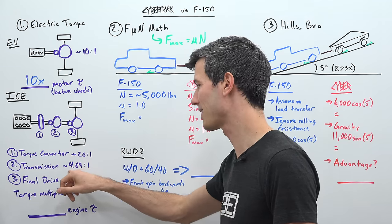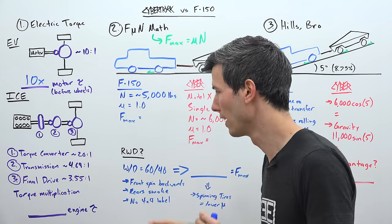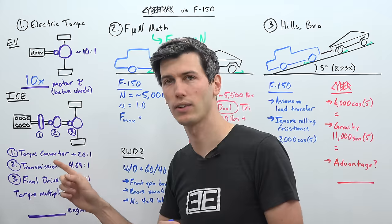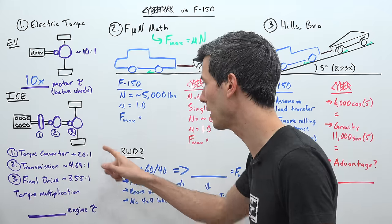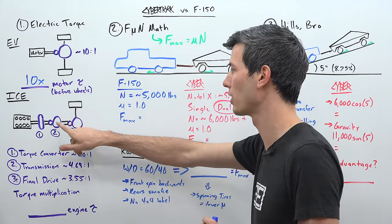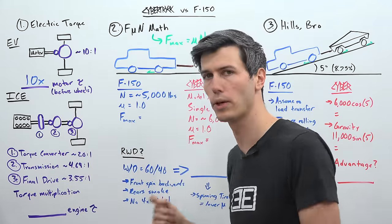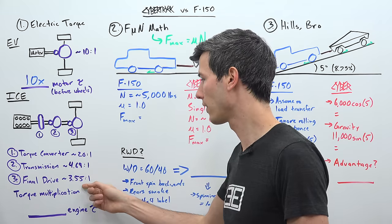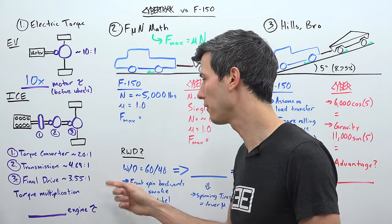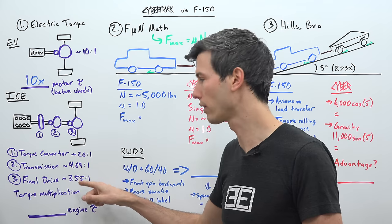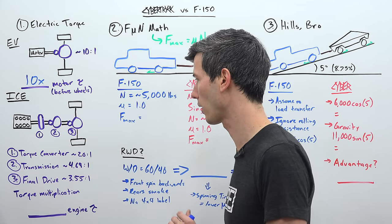Then it goes to the transmission, and in the transmission of the Ford F-150 with the new 10-speed transmission, it's about a 4.69 to 1 gear ratio for first gear. Now this could be slightly lower if they were using the 6-speed, but not a huge difference either way. And then from that transmission, your torque now goes to the rear differential, where you have your final drive ratio. In this case, we're going to assume it's a 3.55.